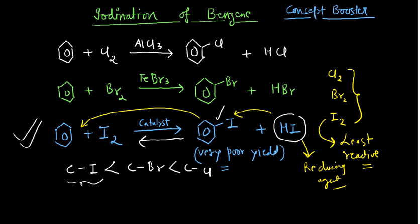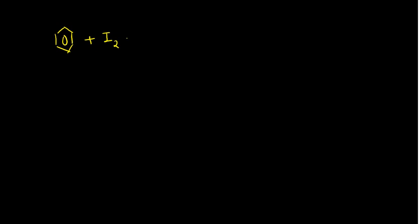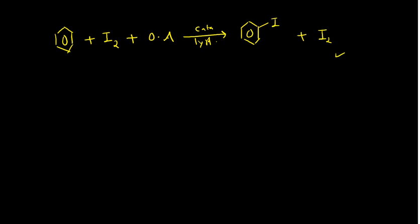Whenever you are doing iodination, you have to take some oxidizing agent. When you take an oxidizing agent, along with a catalyst to produce an I⁺ species, only then can you get a good yield of iodobenzene. The oxidizing agent deals with the HI byproduct — it oxidizes it so the reaction is pushed in the forward direction.